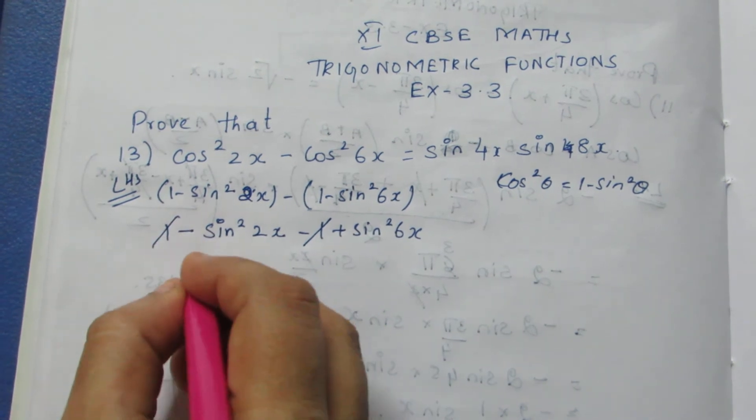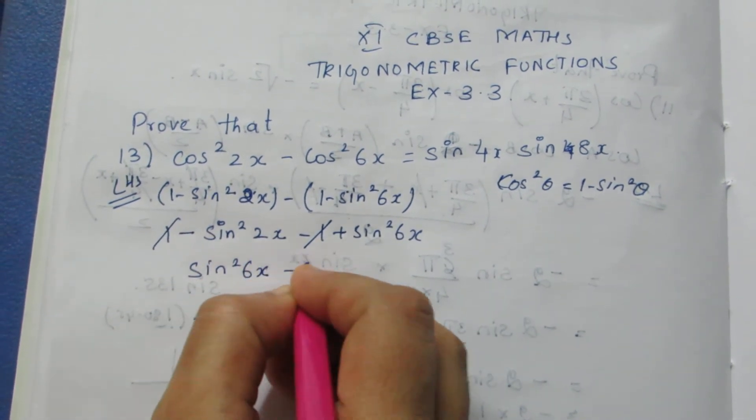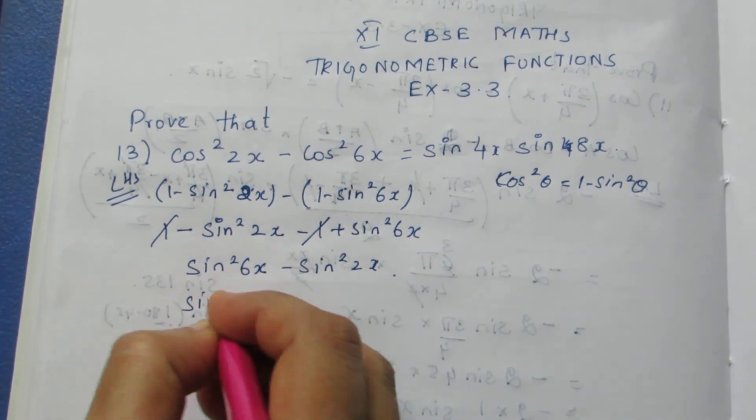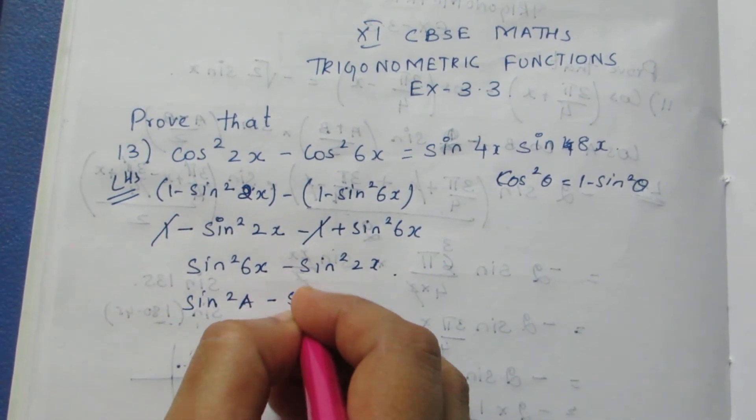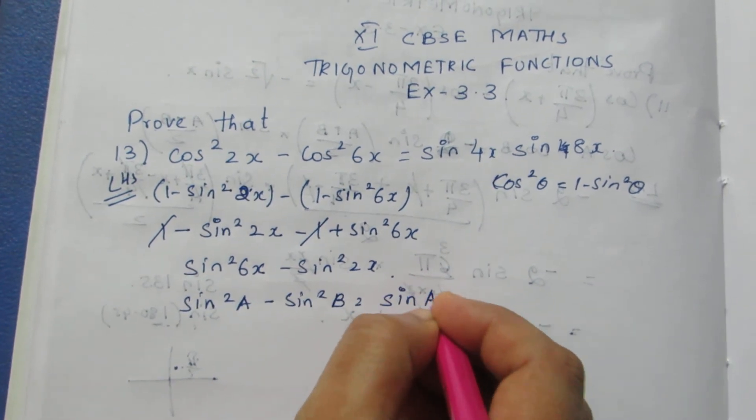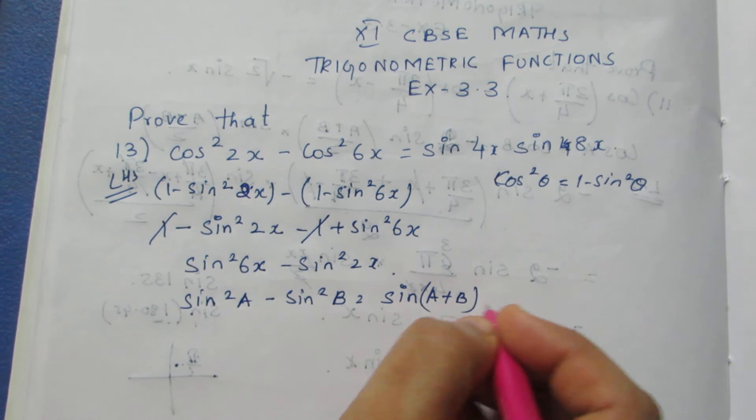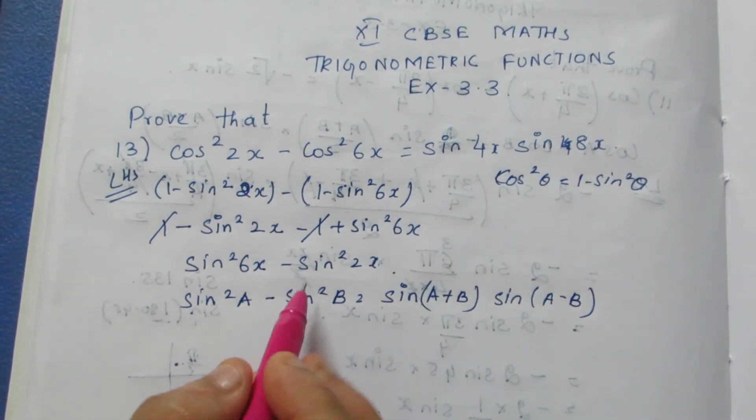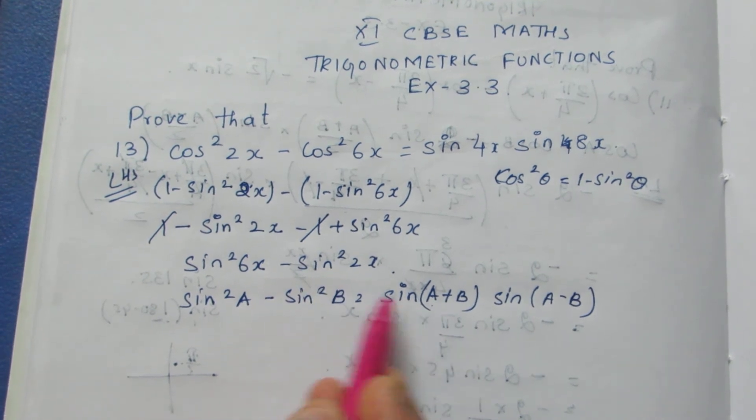Here it becomes sin²6x - sin²2x. We have an identity: sin²a - sin²b = sin(a+b)·sin(a-b). Now just apply the formula.